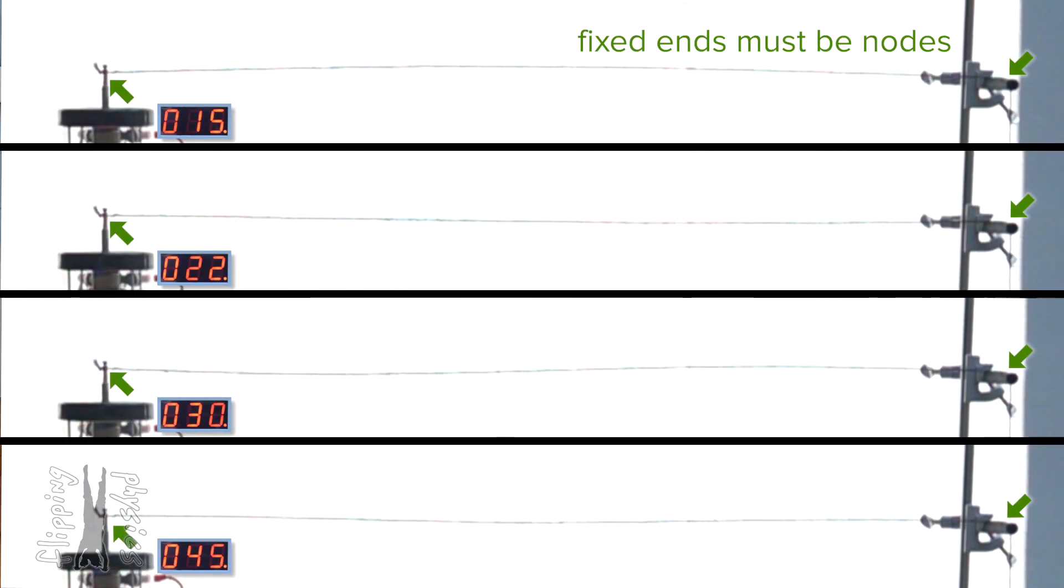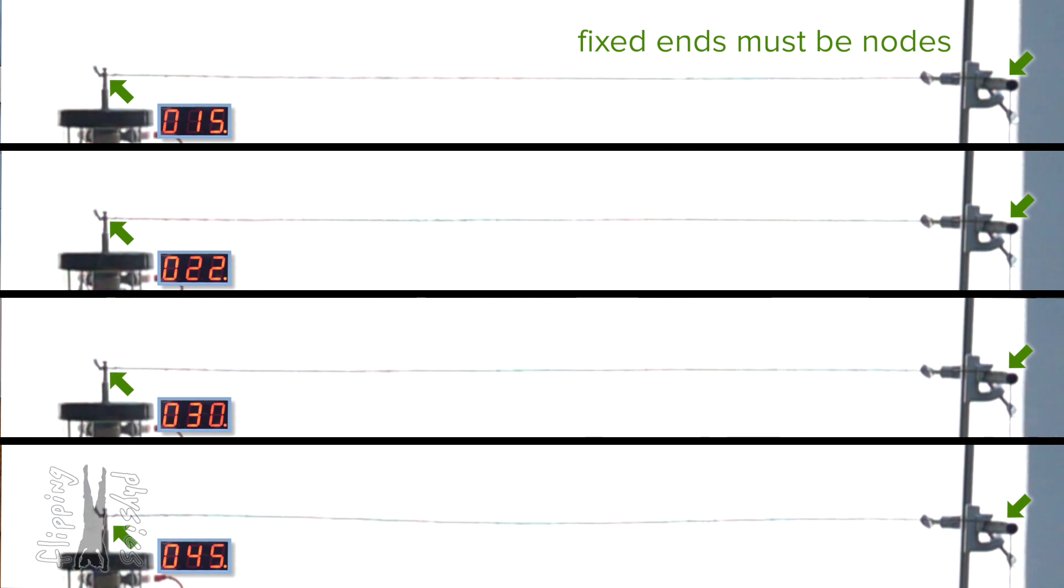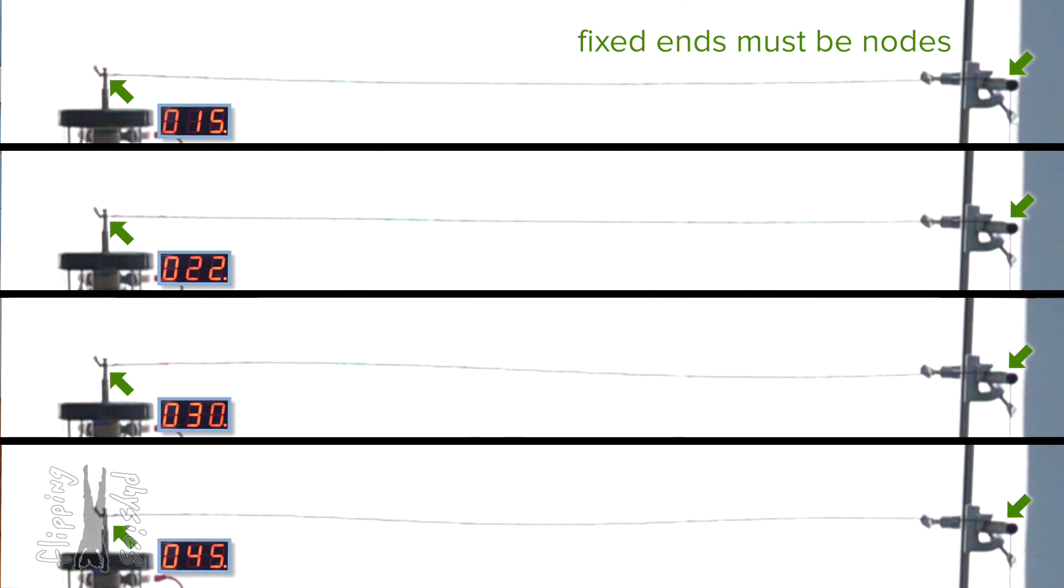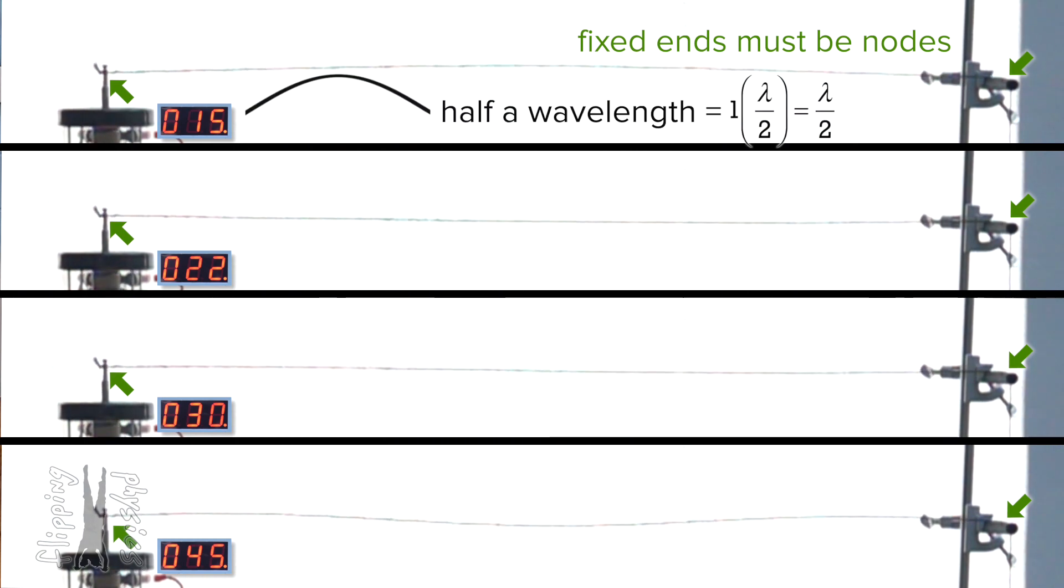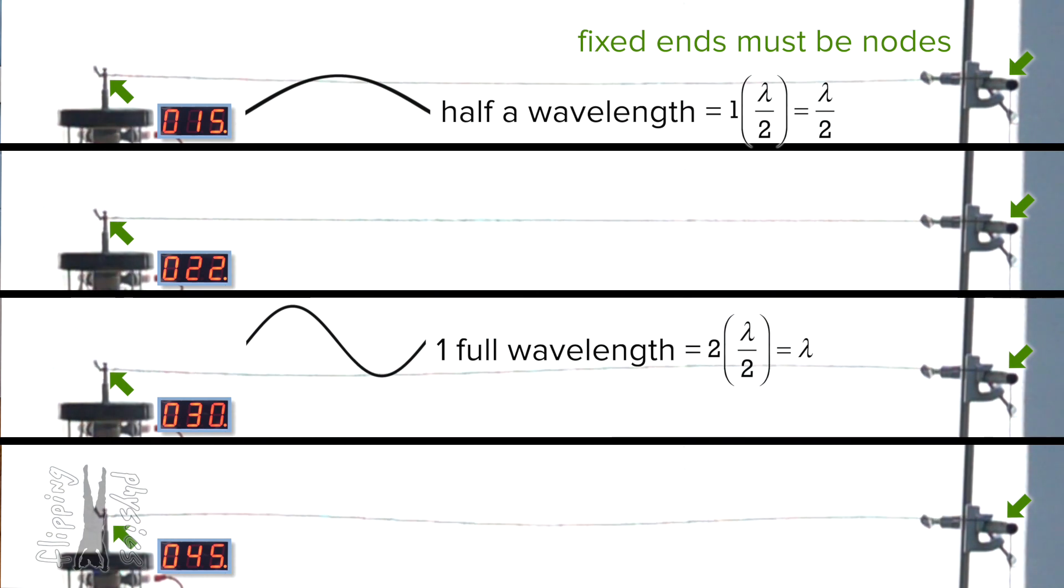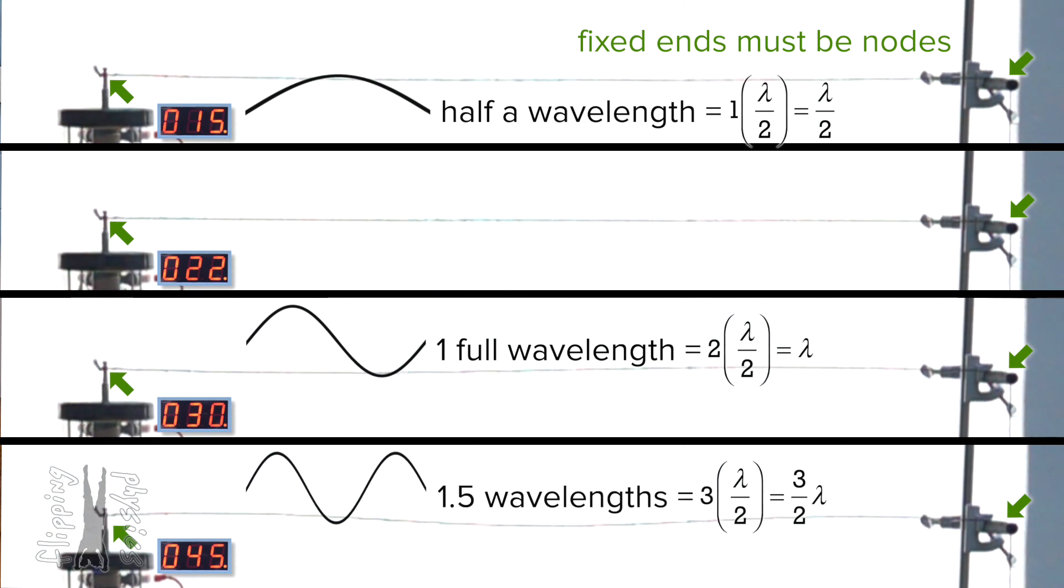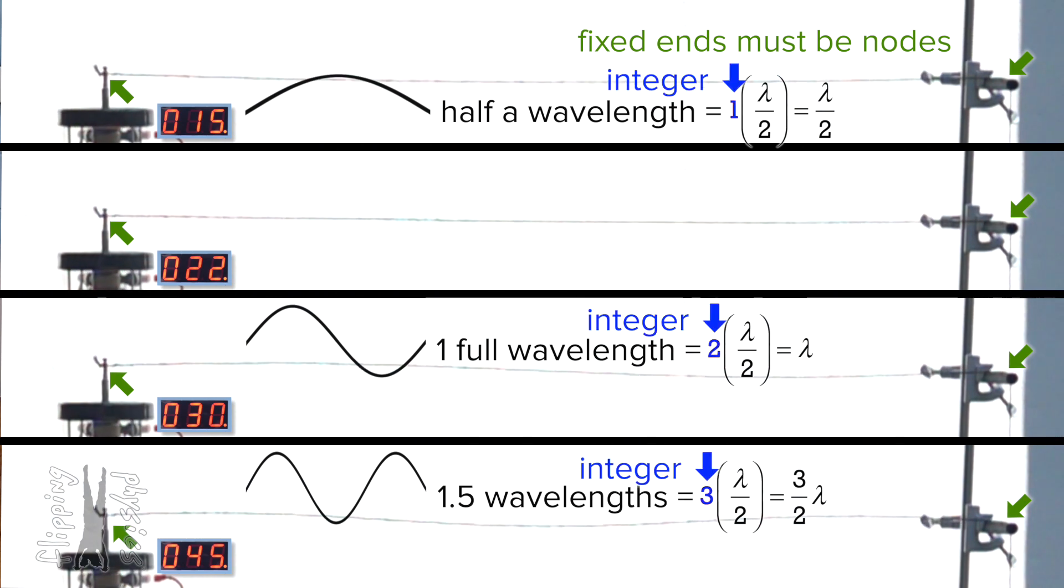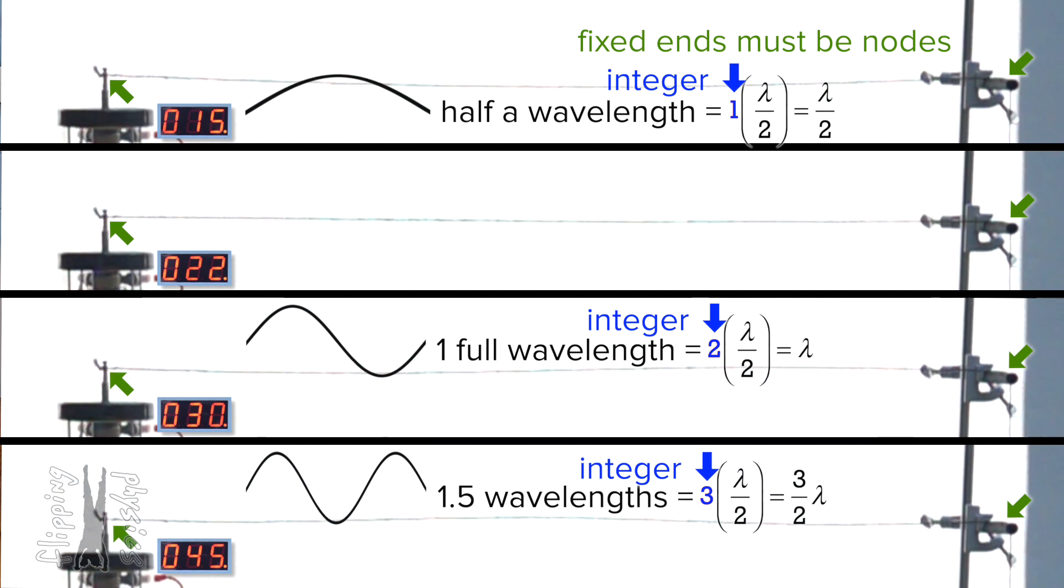Well, why did we say it was not possible in the first place? Because there are nodes or locations of total destructive interference on either end of the string. So, the only wavelengths which are possible on this string have to end with the wave at the equilibrium position at both ends of the string. For example, 15 hertz has half a wavelength, 30 hertz has two half wavelengths or one full wave, and 45 hertz has three half wavelengths or one and one half wavelengths. Each of those is an integer multiple of a half wavelength and therefore both ends of the wave are at the equilibrium position.